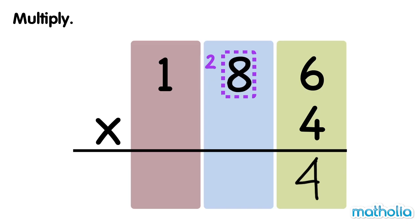Multiply the tens by 4 and add the regrouped tens. 8 tens times 4 equals 32 tens. 32 tens plus 2 tens equals 34 tens. Regroup 34 tens into 4 tens and 3 hundreds.